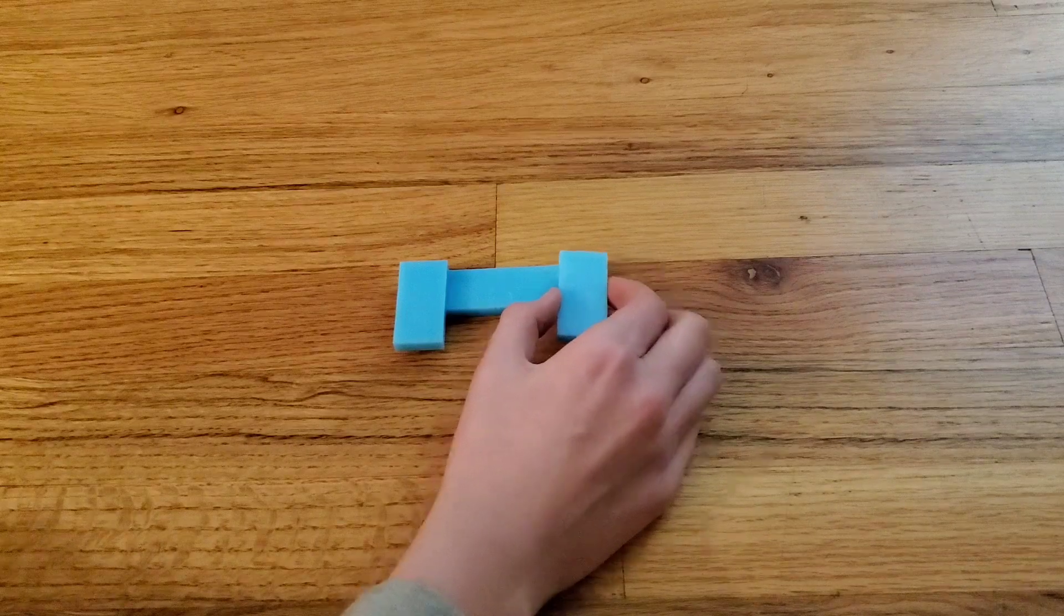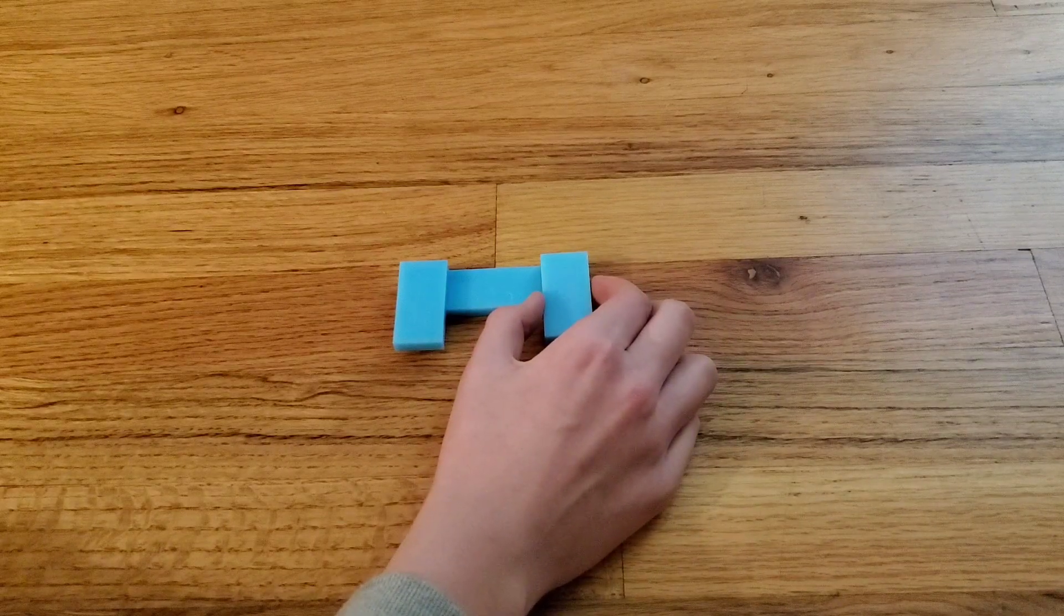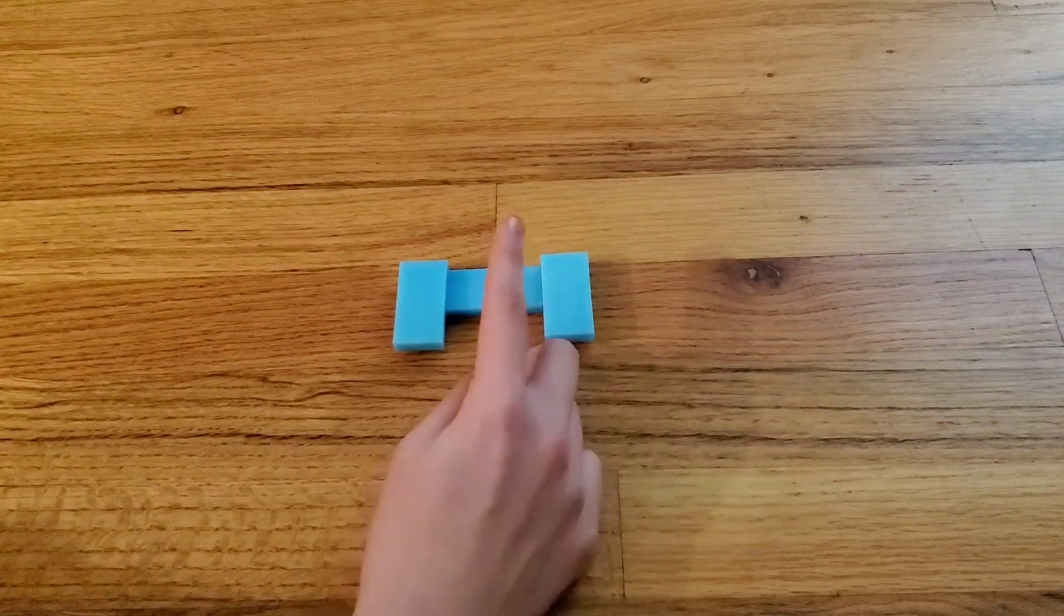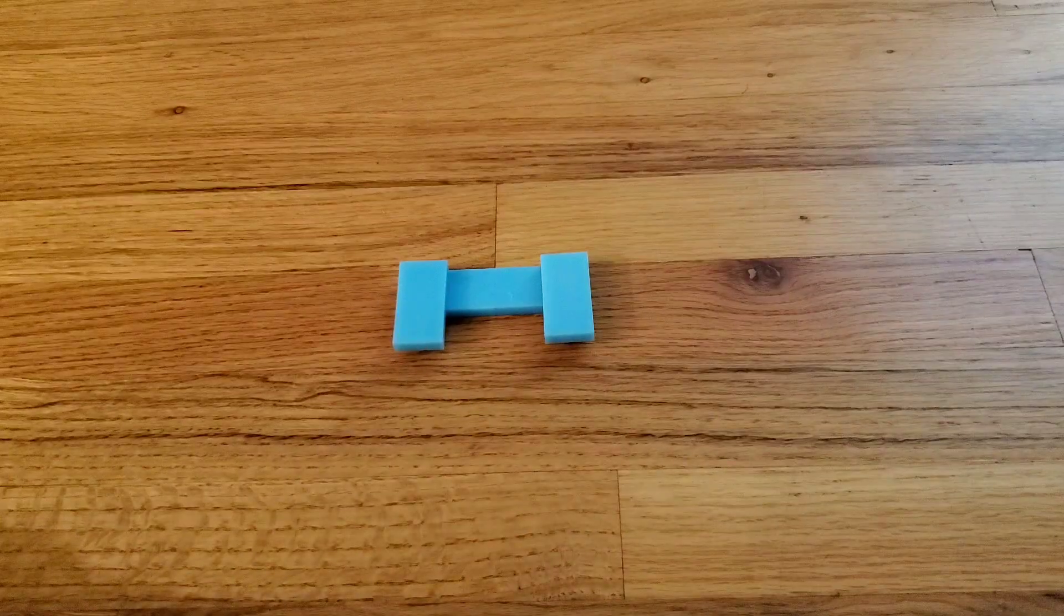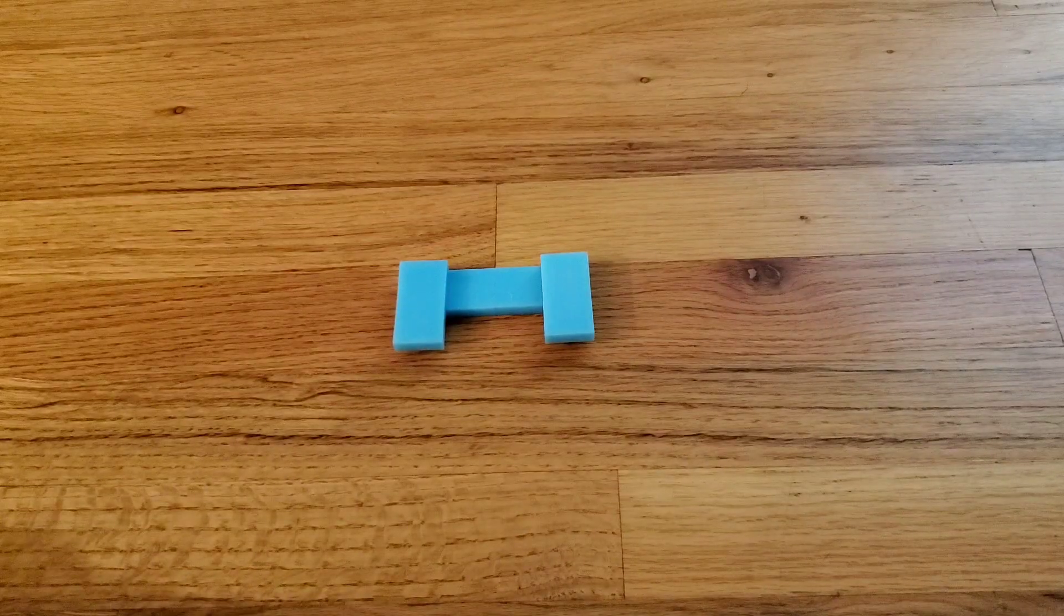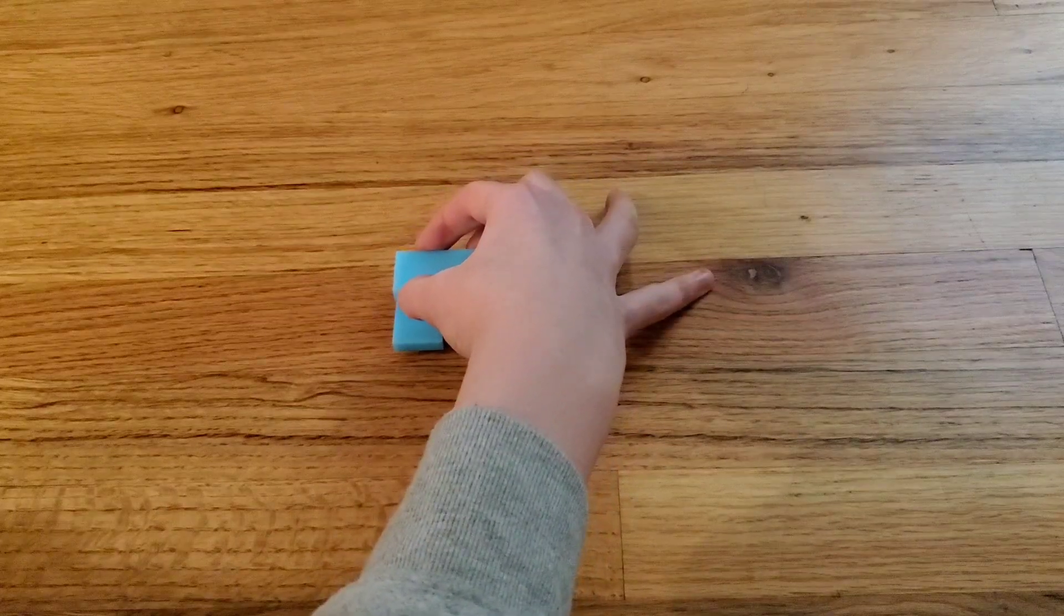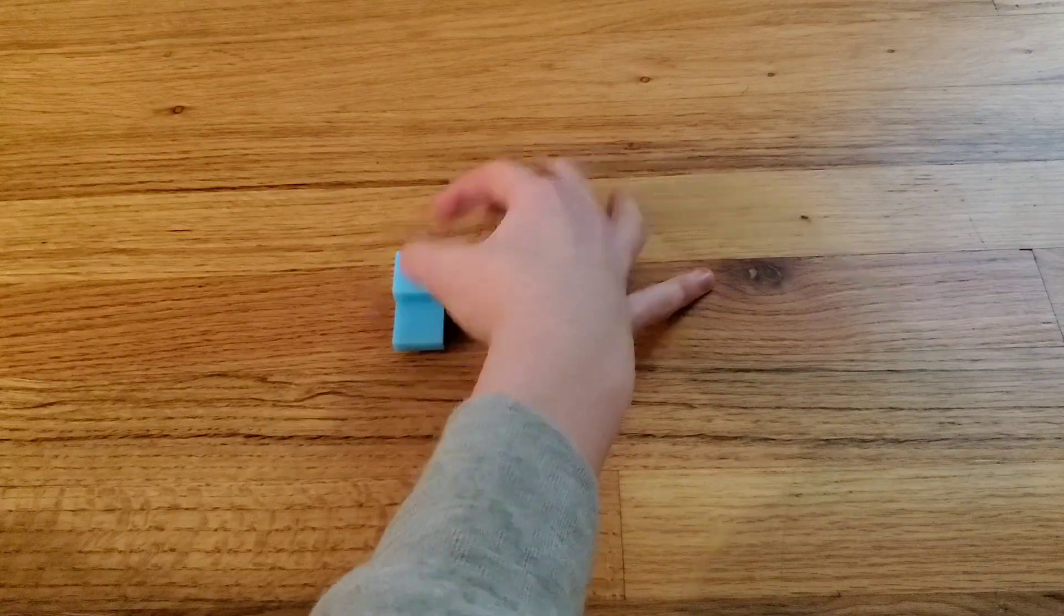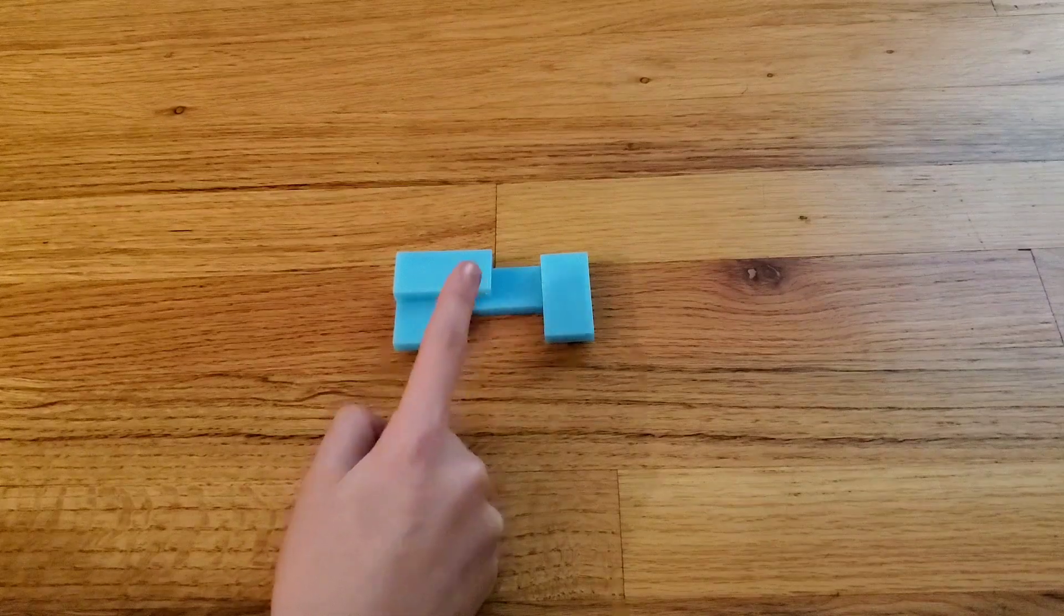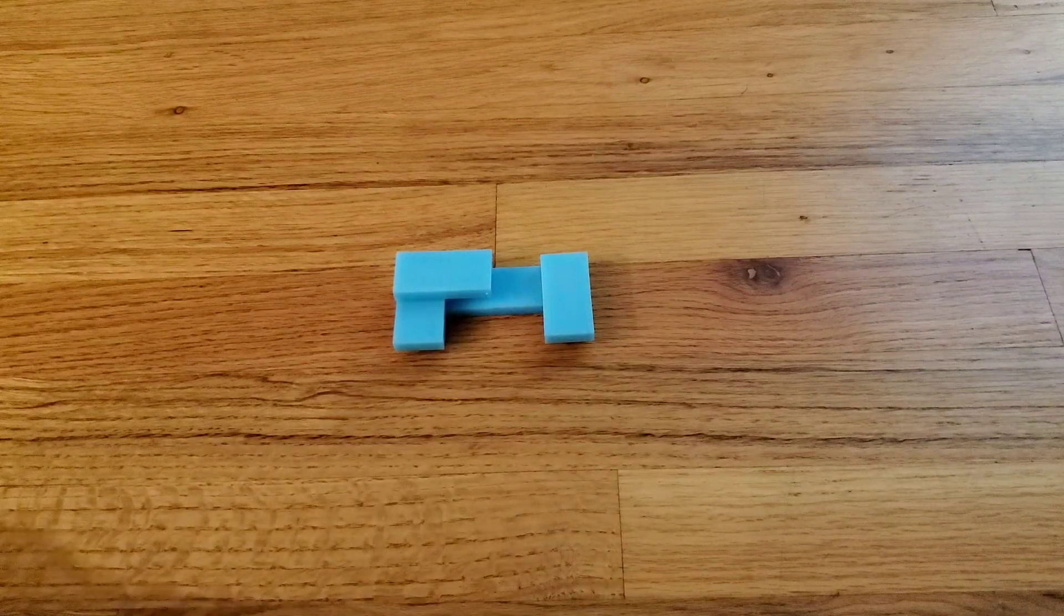Then take another ice blue domino and place it just like that, mirroring what we did on that side. Then take another domino and place it like that, so it's overhanging as much on this side without falling off.